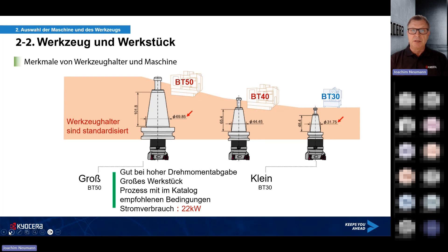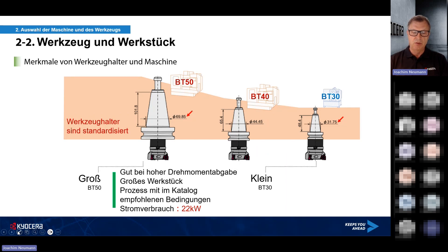Schauen wir uns die Maschinenkonzepte an, speziell die Merkmale von Werkzeughalter und Maschine. Die großen Maschinen sind aufgrund ihrer hohen Steifigkeit hervorragend geeignet, die im Katalog empfohlenen Schnittdaten einzusetzen. Die kleinen Maschinen eignen sich speziell für Bearbeitung mit hohen Drehzahlen, haben aber aufgrund geringerer Steifigkeit ca. 30% der empfohlenen Katalogdaten. Bei den großen Maschinen gehen wir von 22 kW aus, bei den kleinen Maschinen von ca. 5 kW.